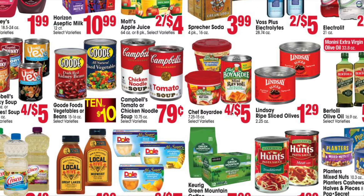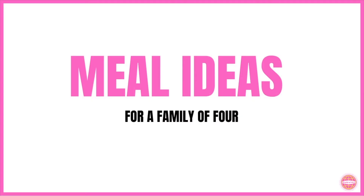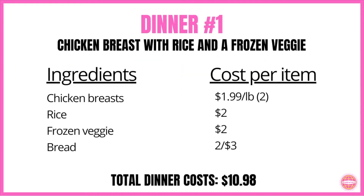Now let's create some dinners out of the sales ad items. These meals will make four servings to feed a family of four. If your family is larger you'll need more; if smaller, you can use these dinners for two nights in a row or use leftovers for lunch the next day. We have five different dinner options. Dinner number one is chicken breast with rice and a frozen veggie. The chicken breasts are on sale for $1.99 a pound — grab two pounds. Rice is around $2, and you may already have some in your pantry. Frozen veggies run around $2 or less. The bread was on sale, two loaves for $3. Total dinner cost: $10.98.